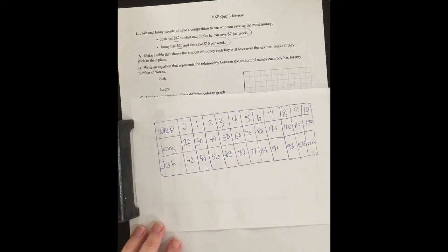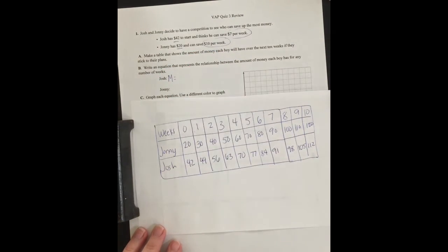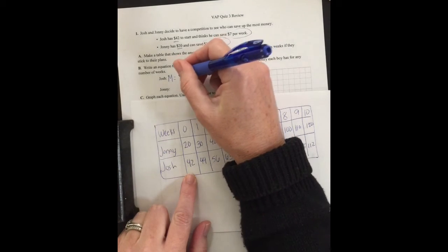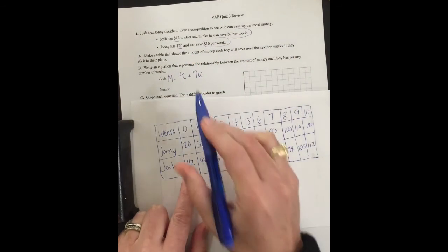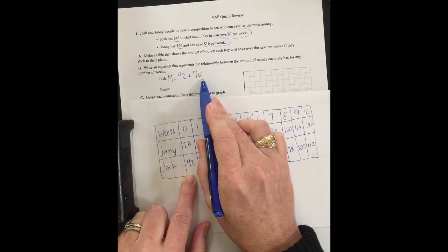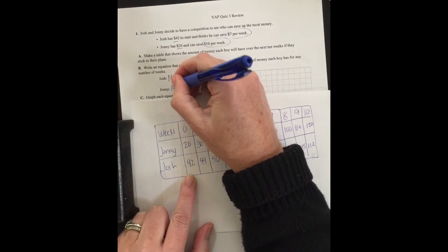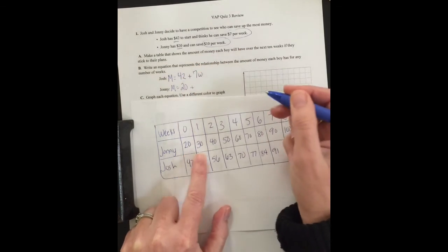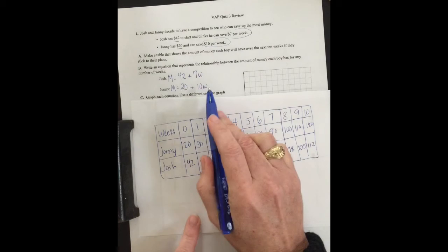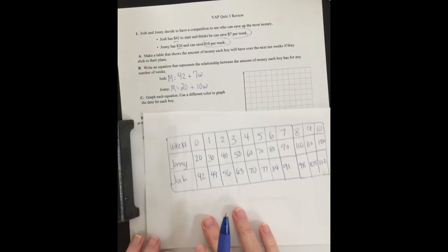Part B: write an equation that represents the relationship between the amount of money each boy has for any number of weeks. So Josh, his money would equal $42 plus $7 for each week. If I multiply seven times the number of the week, that'll give me the amount that I'm going to add on to $42. So that gives me my total for money: M = 42 + 7W. Johnny, his money will equal $20 plus $10 per week: M = 20 + 10W. I multiply the number of weeks times 10 and add that to 20 and it'll give me the amount of money that he has saved.